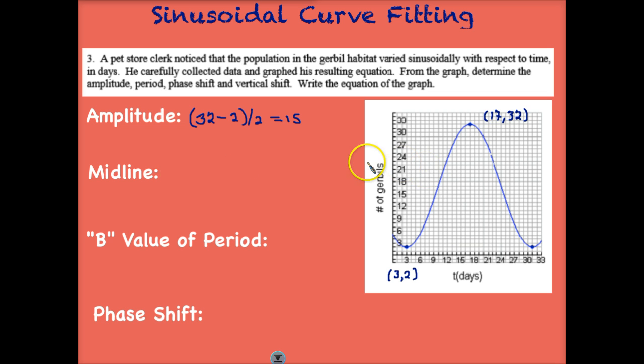Using the same information, we can determine our midline by just adding the high to the low and dividing by 2. In other words, taking the average, that's 34, which gives us 17. Our midline is 17.